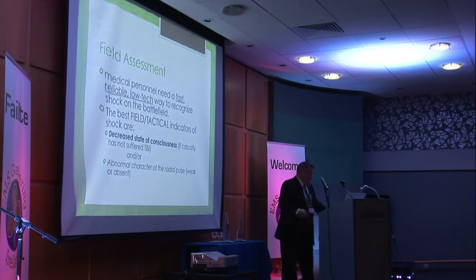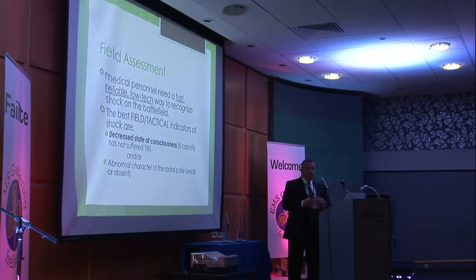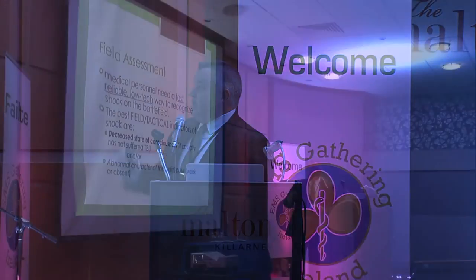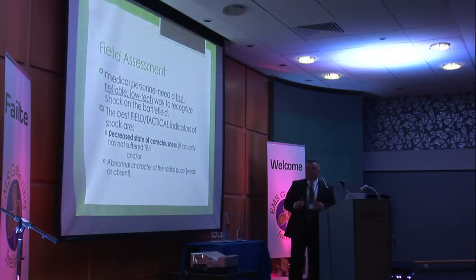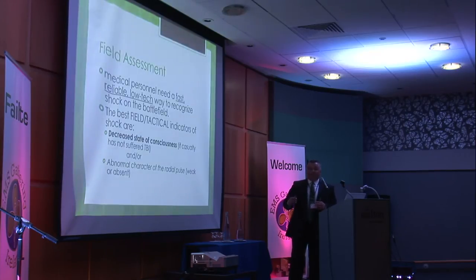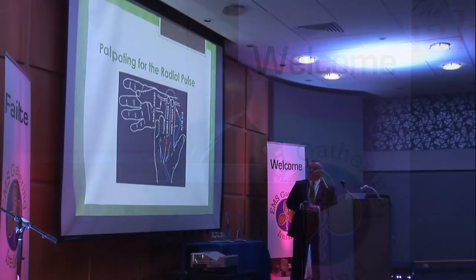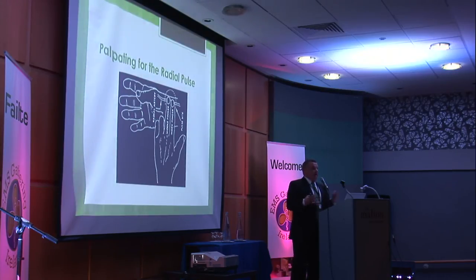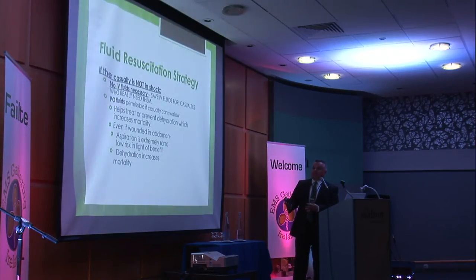In the field you need fast, low-tech assessment — you won't always have your high-end gear. The best tactical field indicators of shock are altered mental status: the patient is not thinking clearly, has decreased consciousness, is babbling, or is not acting like themselves. If they have a TBI that complicates things, but for extremity or other bleeding that's a key indicator to consider fluids. The other critical sign is an abnormal radial pulse — if the radial pulse is weak or absent, their MAP is dropping fast and systolic pressure is likely below 80. It's a rough but reliable field measurement.